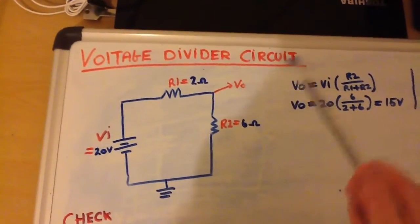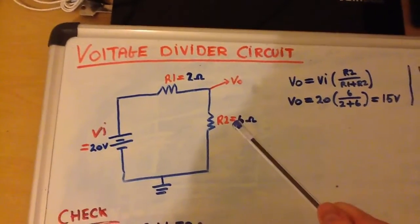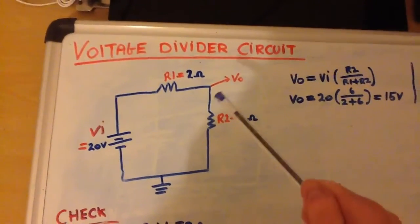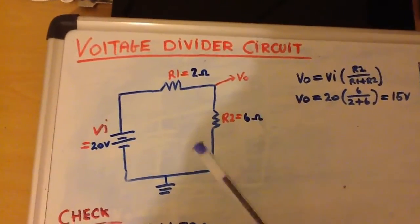This is the voltage divider circuit. Whenever you have two resistors in series, you can use the voltage divider equation to find out what the output voltage is at this particular point in our circuit.